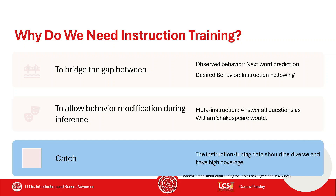There is a catch: instruction tuning data should be diverse. If the instruction tuning data is all about summarization, the model might lose a lot of behavior it learned during pre-training. By diverse, I mean the tasks should be very different — maybe you don't need 10,000 examples per task, maybe 10 examples per task is sufficient, but you require thousands of tasks to ensure it does not focus on a single behavior. Pre-training is still the most important phase where all the reasoning is incorporated, and instruction tuning just makes the model behave more like what humans want.